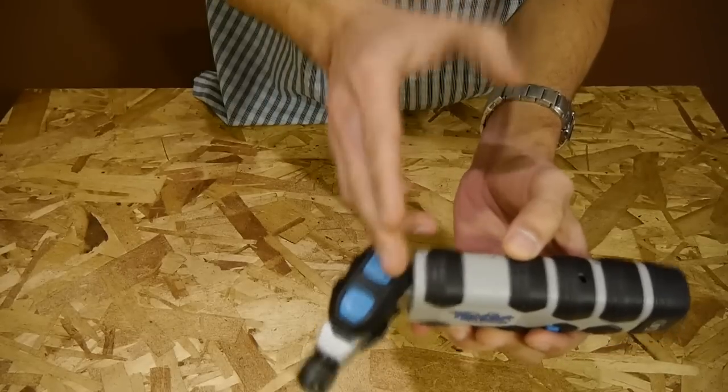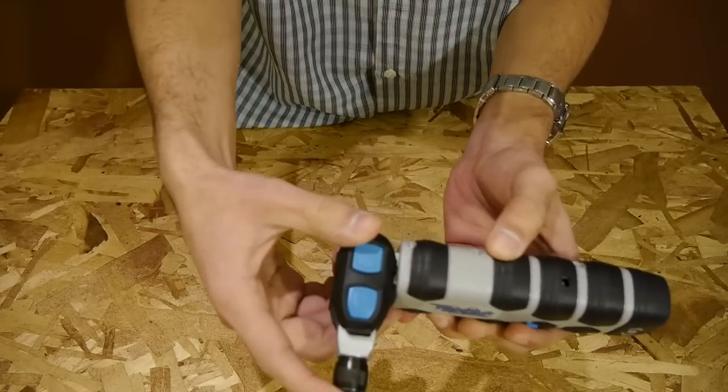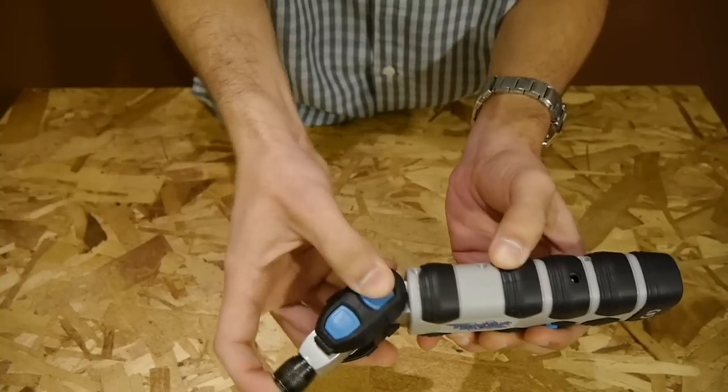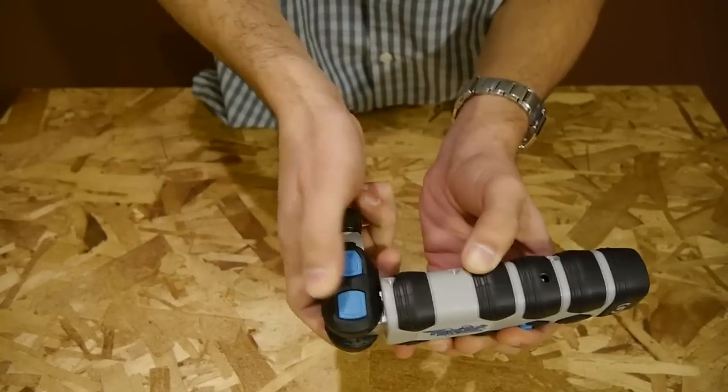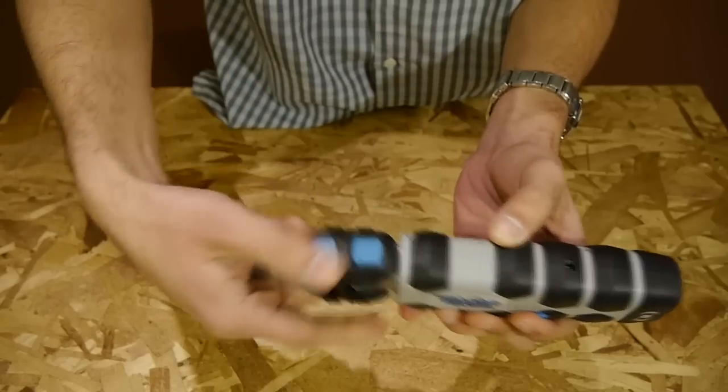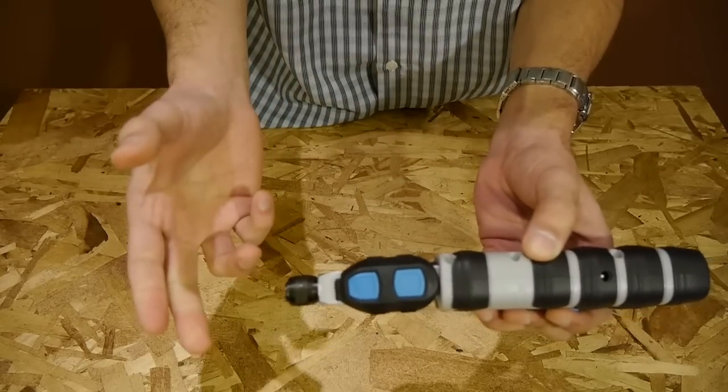The bottom joint has 7 fixed positions, starting with the first position, 2, 3, 4, 5, 6, and 7 fixed positions. And the upper joint has another 7 fixed positions.